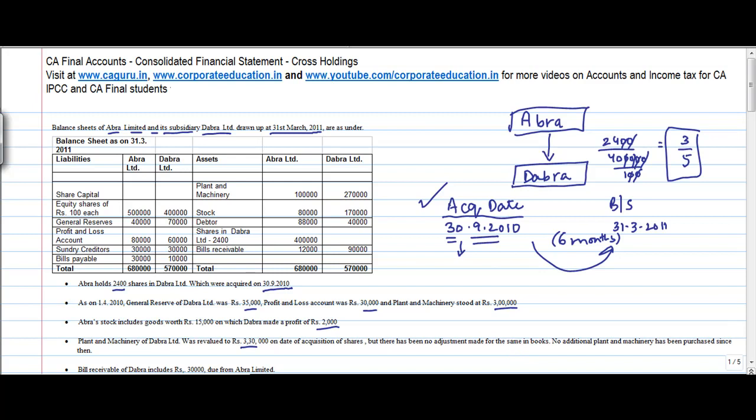So on the acquisition date my plant and machinery was 3,30,000 but there was no adjustment which was done. No additional plant and machinery has been purchased since then. Bill receivable of Dabra Limited includes 30,000 due from Abra Limited.